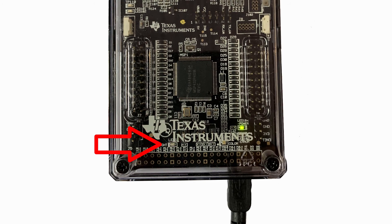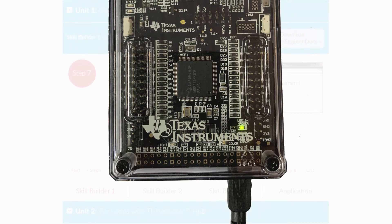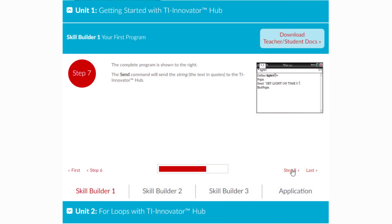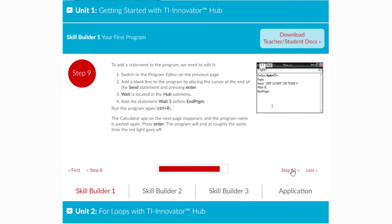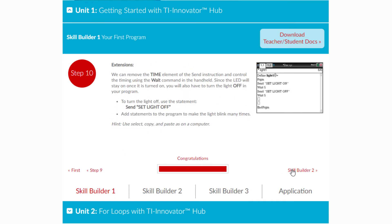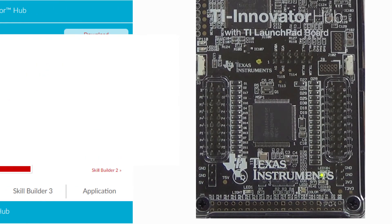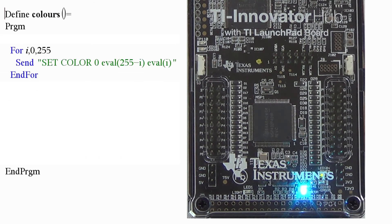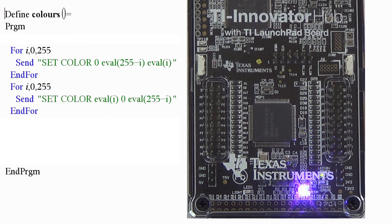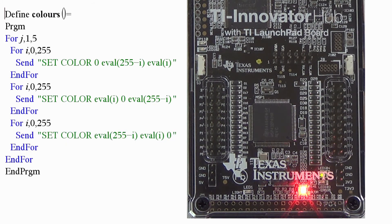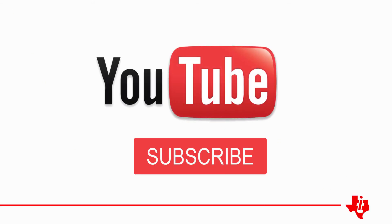Check out the remaining steps in Skill Builder 1 for the TI Innovator Hub. With a little more programming, you can also make it blink. In the next tutorial, you'll see how to change the colour of the LED. That's all for this session. Make sure you finish off Skill Builder 1 from the free 10 minutes of code section of our website, and subscribe to our channel to keep up to date as new tutorials are added to this series.